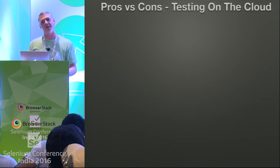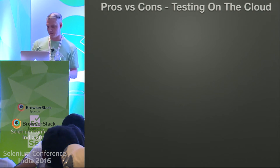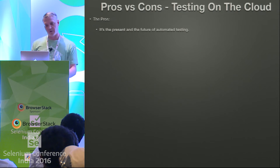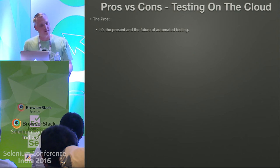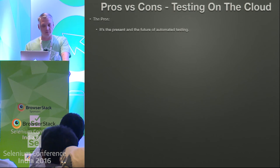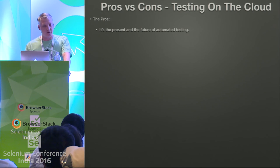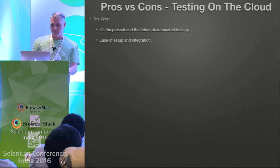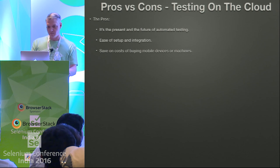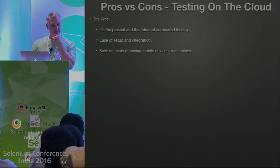First we'll talk about the cloud as an option — the pros and cons. You can send your tests to the cloud. So the pros: it is the present and the future of automated testing. Just like everything for our server architectures are going to AWS, to Azure, etc., so will our tests. Everything will be run in the cloud; very rarely will things be run locally. You have ease of setup and integration — you don't have to do any of that, it's all done for you. All you have to do is send your tests to these services. You don't have to buy all the machines and all the devices.